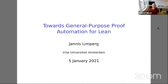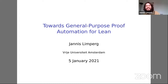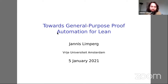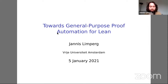Thank you for that introduction. I'm going to talk about general purpose proof automation for Lean, which will probably take the rest of my PhD — the next three years or so. The idea is to have a tactic called 'auto' which will dispatch most trivial sub-goals that arise in mathematical or computer science proofs — the stuff you wouldn't write on paper, you also shouldn't have to write in Lean. Auto is supposed to do a limited form of proof search.